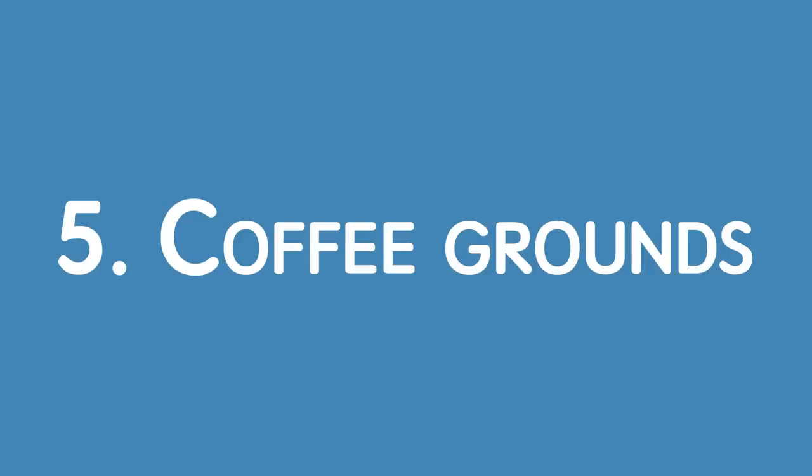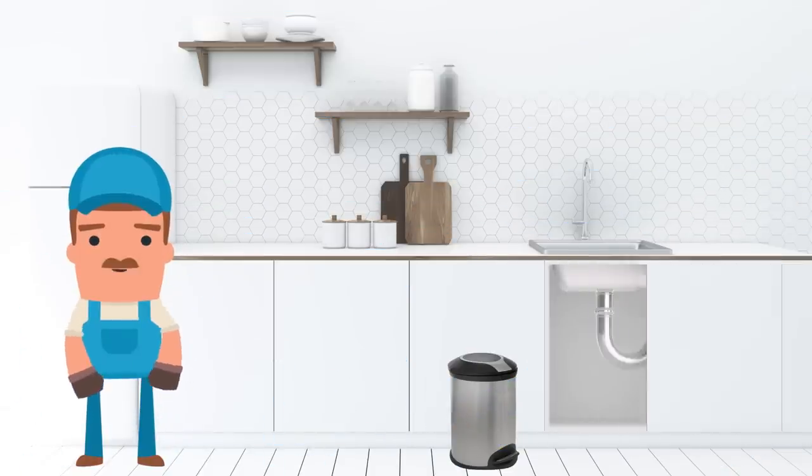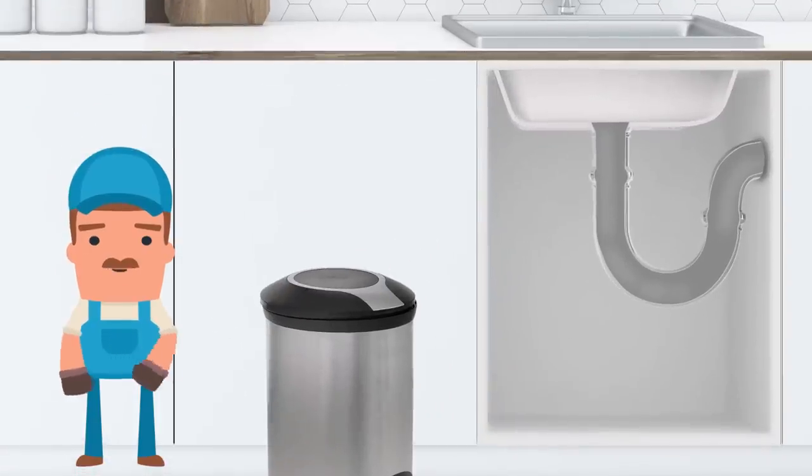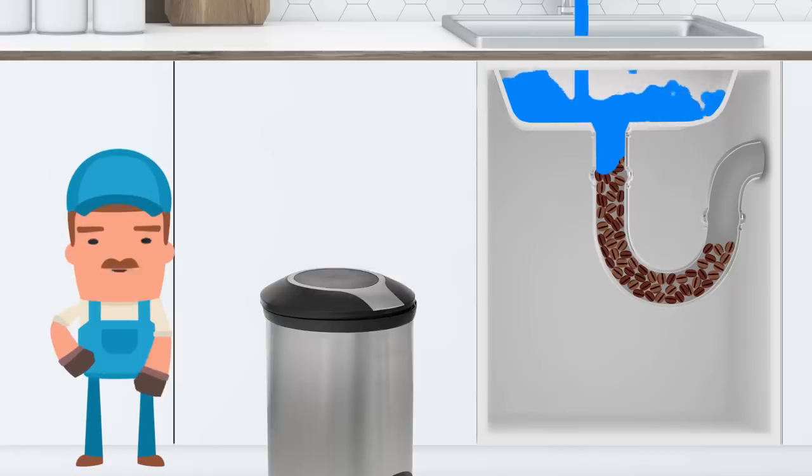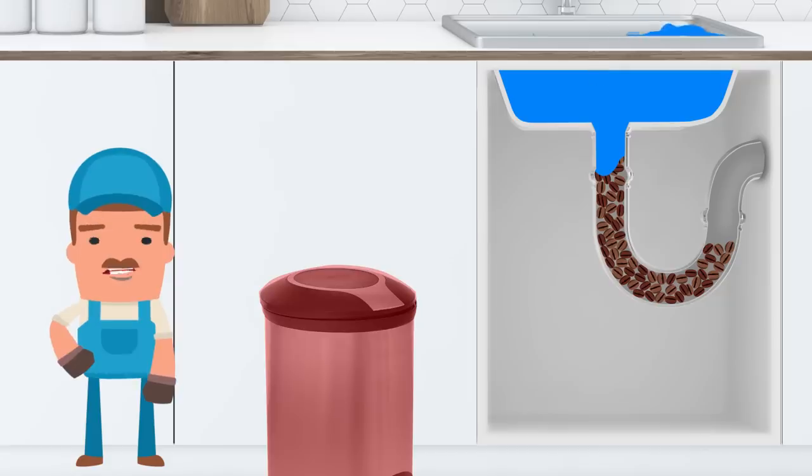Number 5. Coffee Grounds. According to plumbers, coffee grounds are one of your drain's arch-nemeses. Even the blissful coffee aroma doesn't help the situation. Coffee grounds stick together to form pipe-blocking gunk. So, you guessed it, throw them in the trash. Or you can use them for your plants. They love coffee compost.